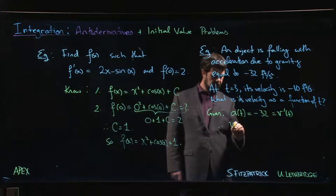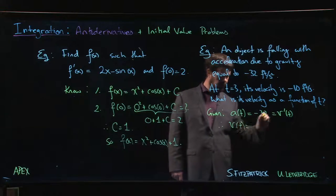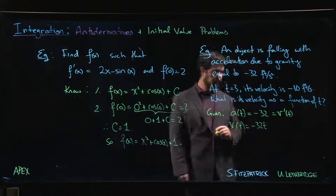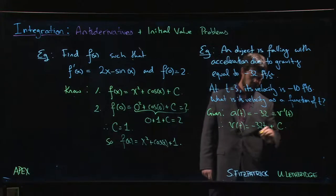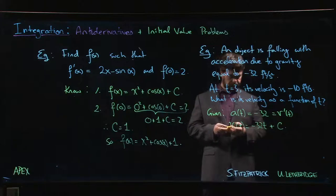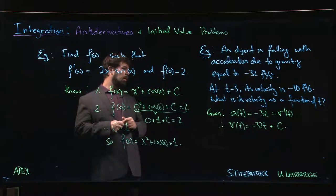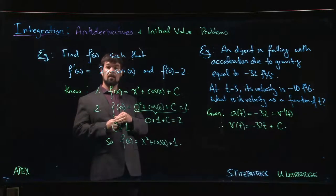We can take an antiderivative and we can say that v of t must be minus 32t plus some constant. Where do we go from here? Well, we know that when t is equal to 3, the velocity is equal to negative 10.